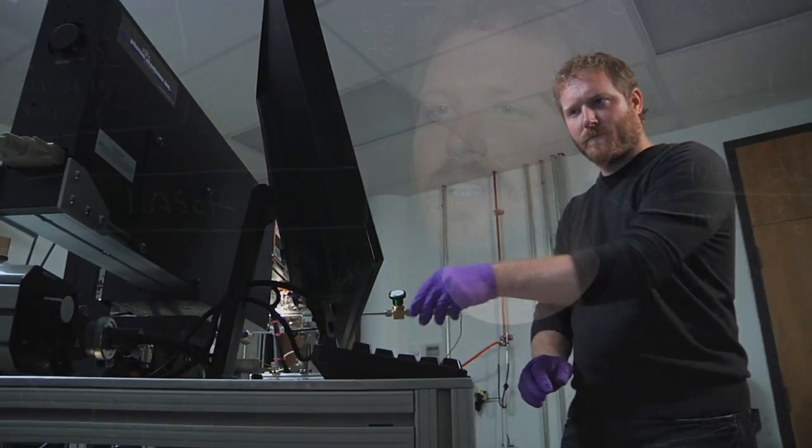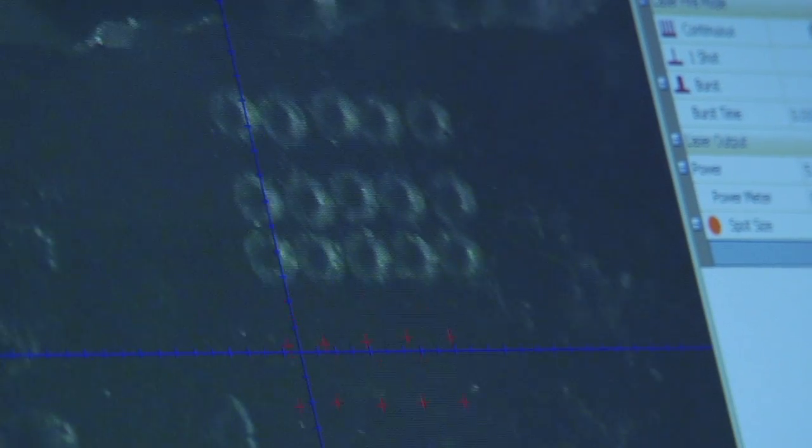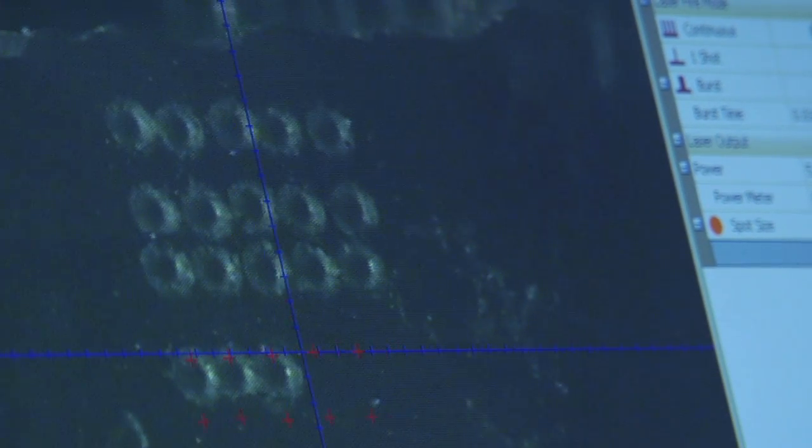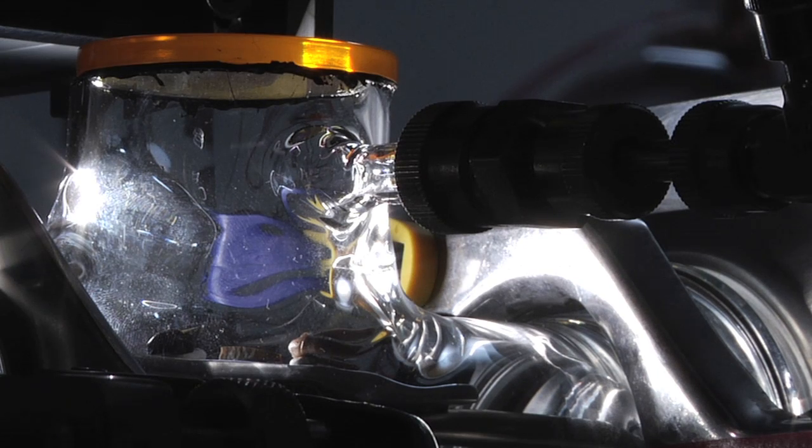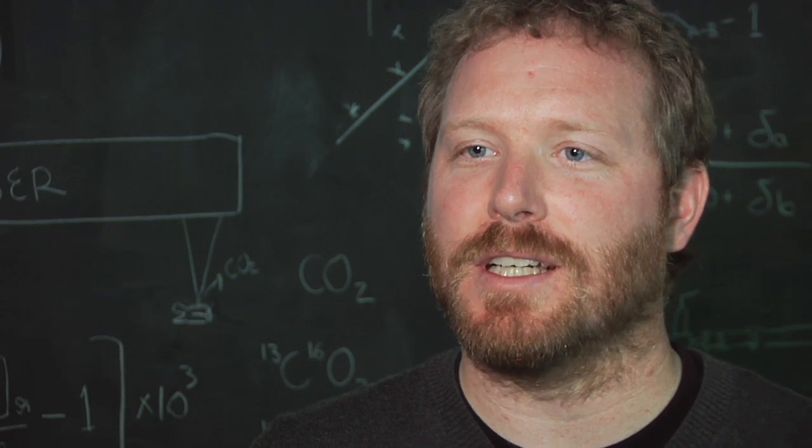We use a laser, an infrared laser, to zap a tiny portion of the tooth surface that's smaller than the size of a pinhead. That liberates carbon dioxide from the tooth, and then we analyze the carbon isotope composition of the tooth enamel.